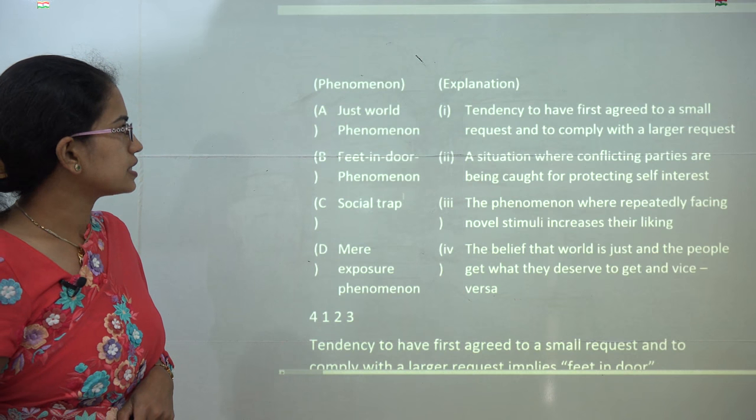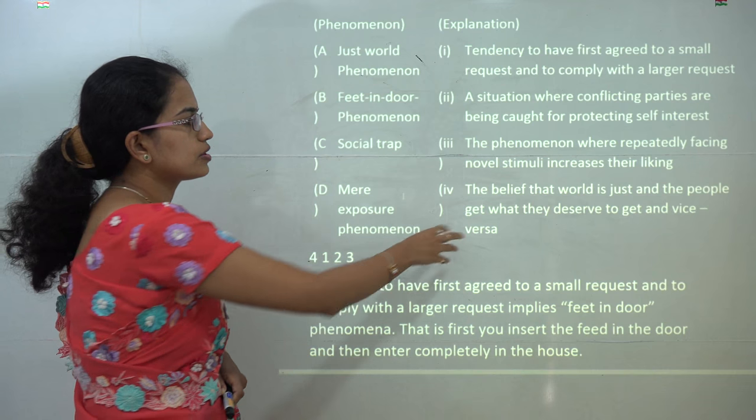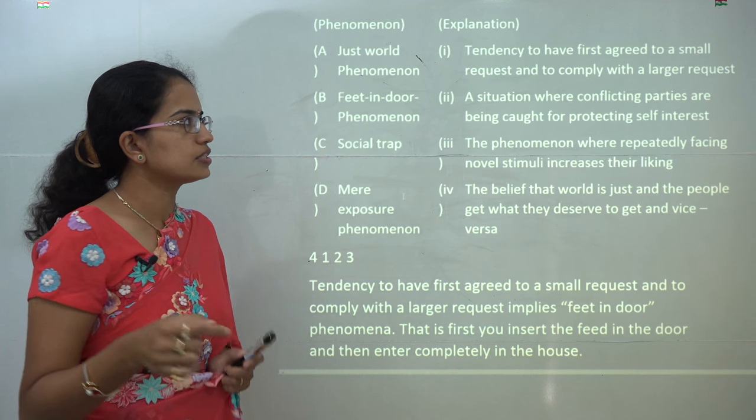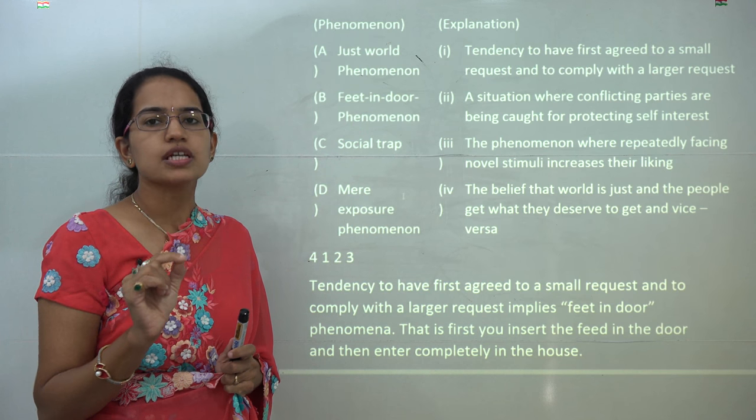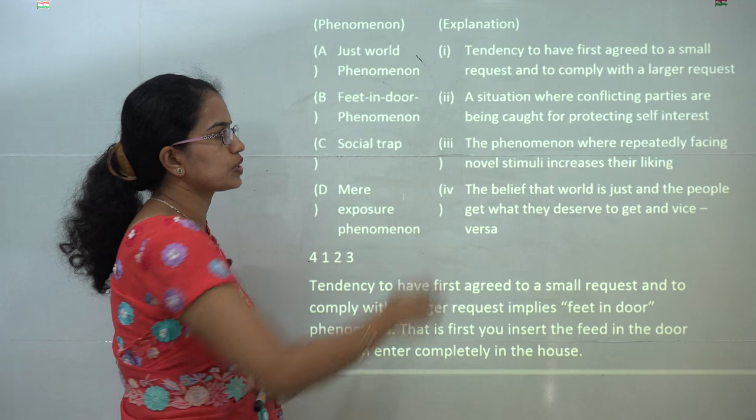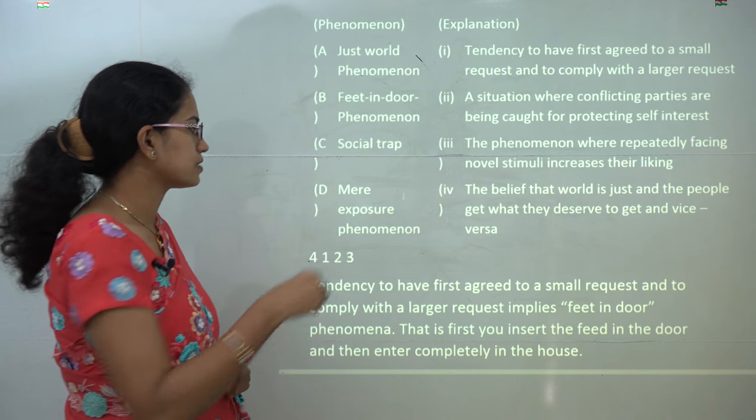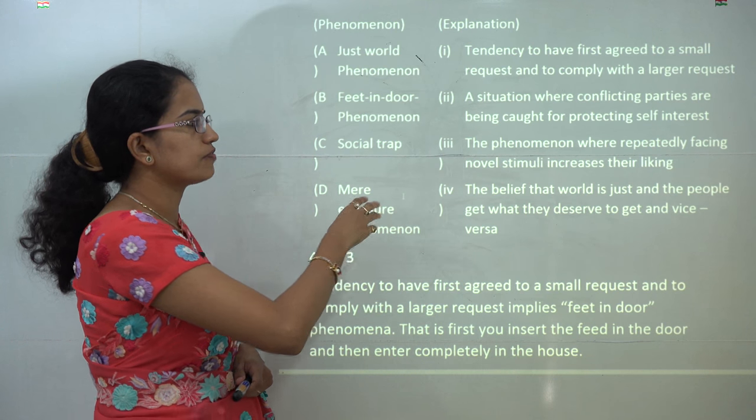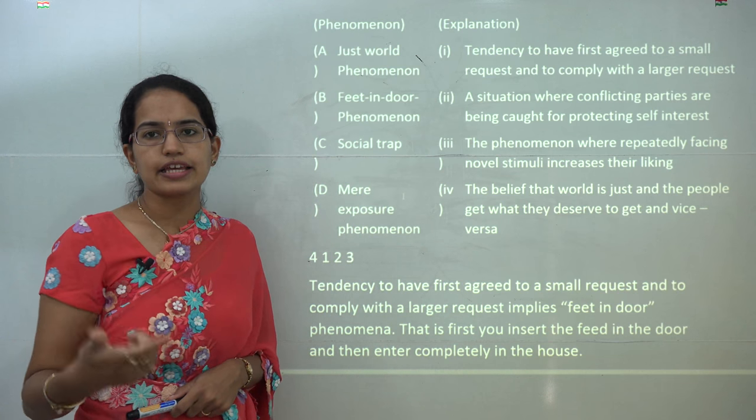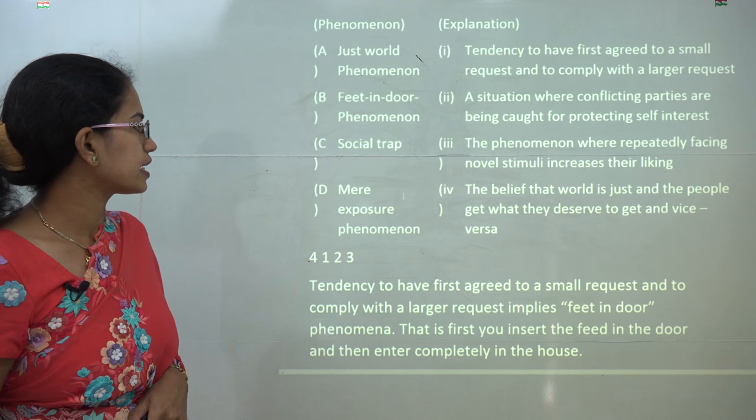The next is you have to match the phenomena with the explanation. So just world phenomena talks about the belief that world is just and all the people are fair and good. Foot in the door means you have a tendency to have a small argument first and then ask for a larger request. Social trap talks about a situation where conflicting parties are being caught for self-interest or self-protection. The mere exposure phenomena talks about the phenomena where repeatedly facing the same situation increases the liking of that phenomena. So again and again, if you are faced with the same thing because of the exposure, you start liking it. So that's it.